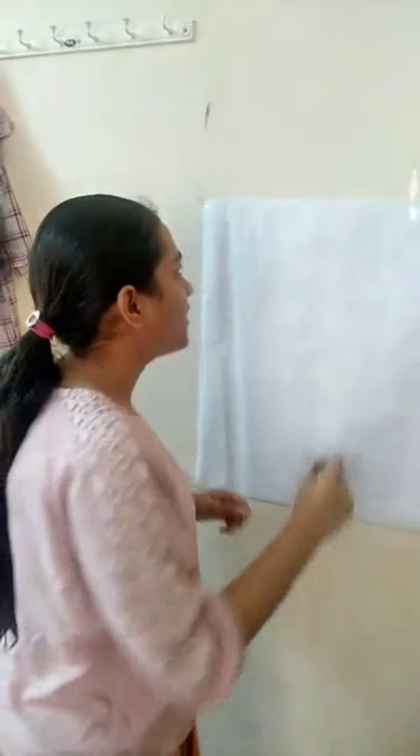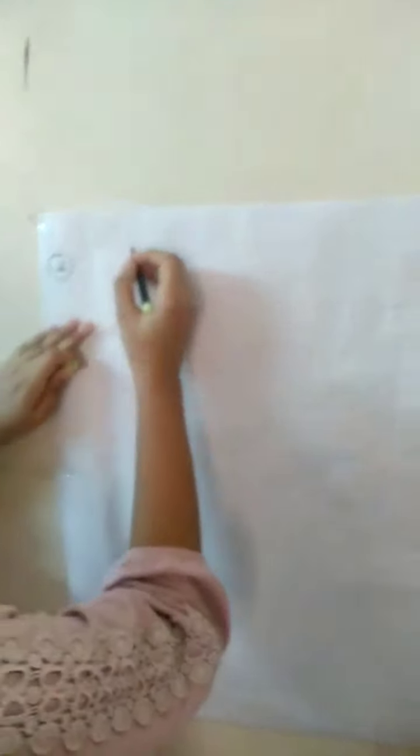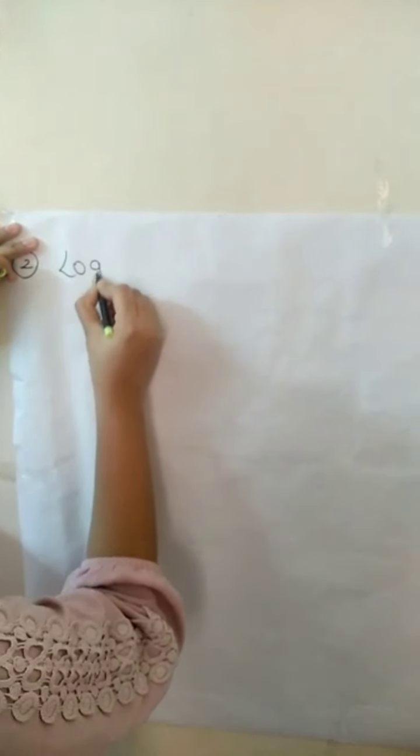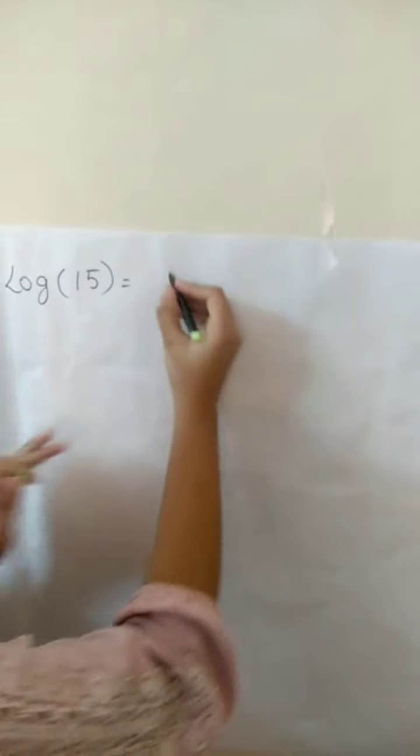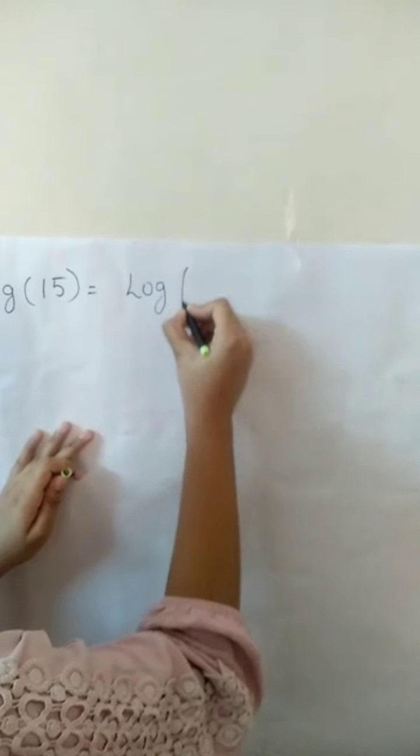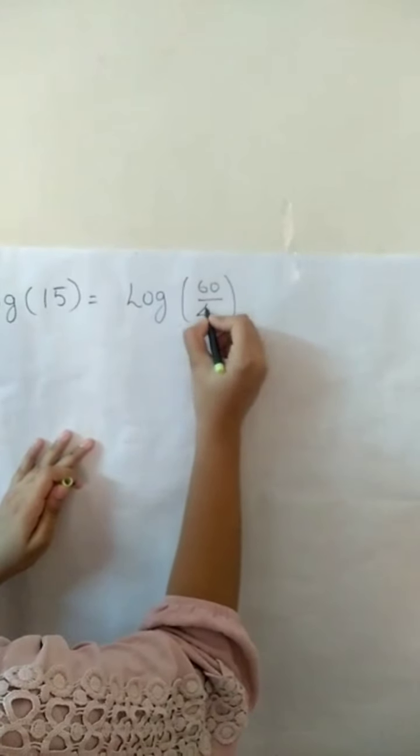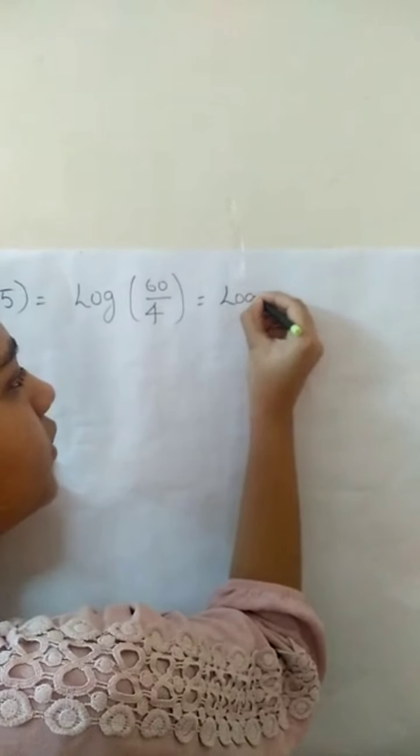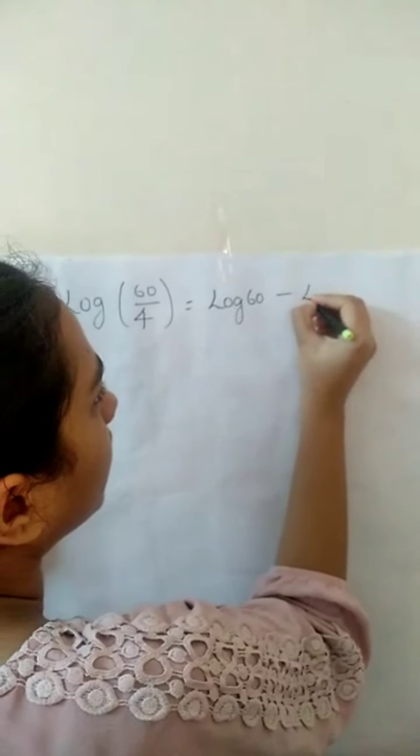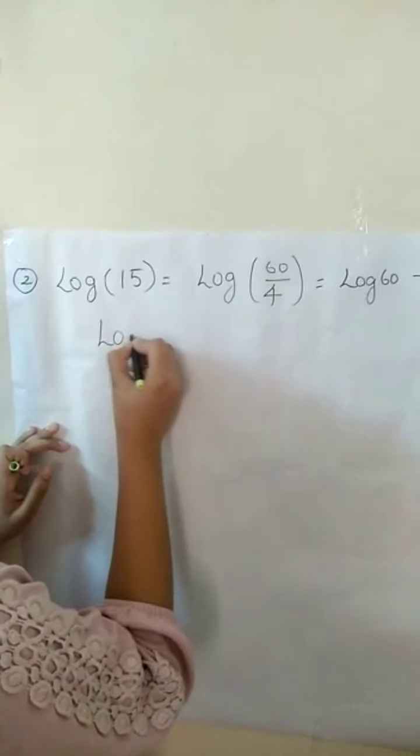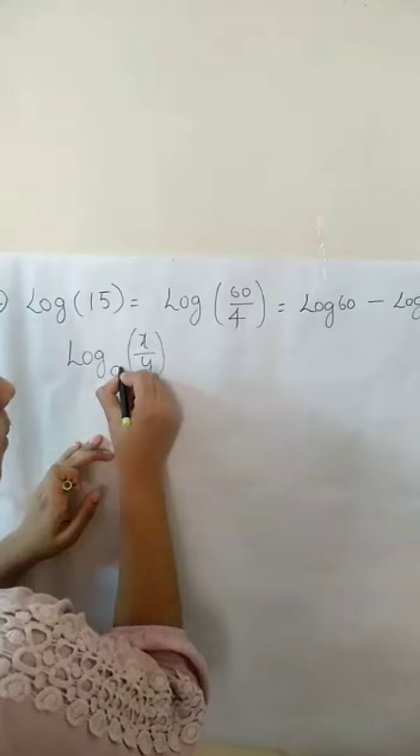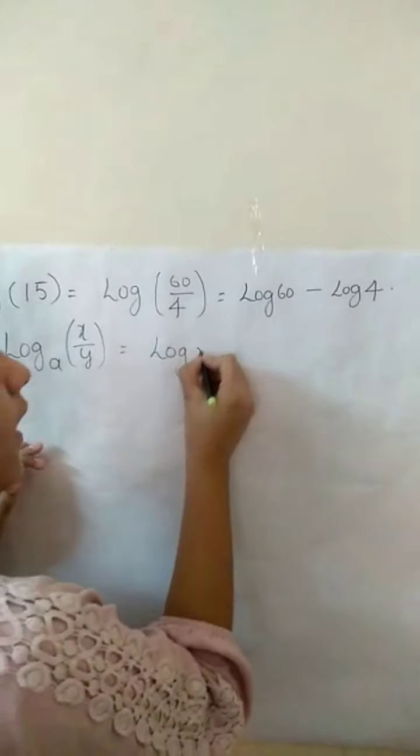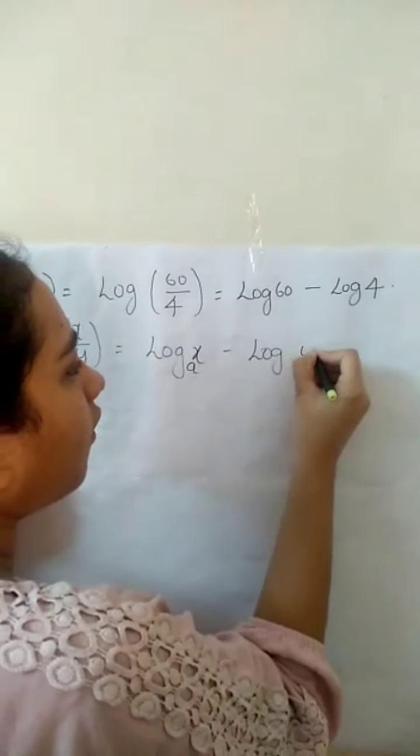Let's discuss the second property. Log 16 minus log 4. We can write it as log 16 by 4. It is equal to log 16 minus log 4. From this we say that log of x by y base a is equal to log x base a minus log y base a.